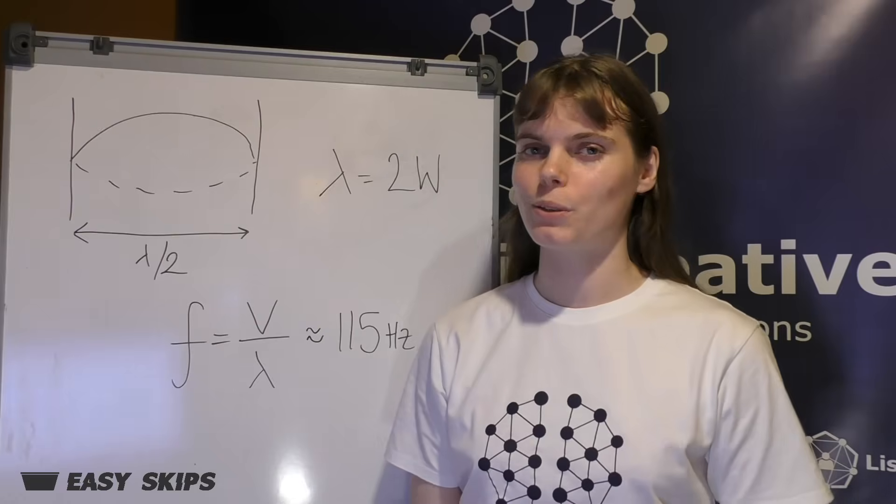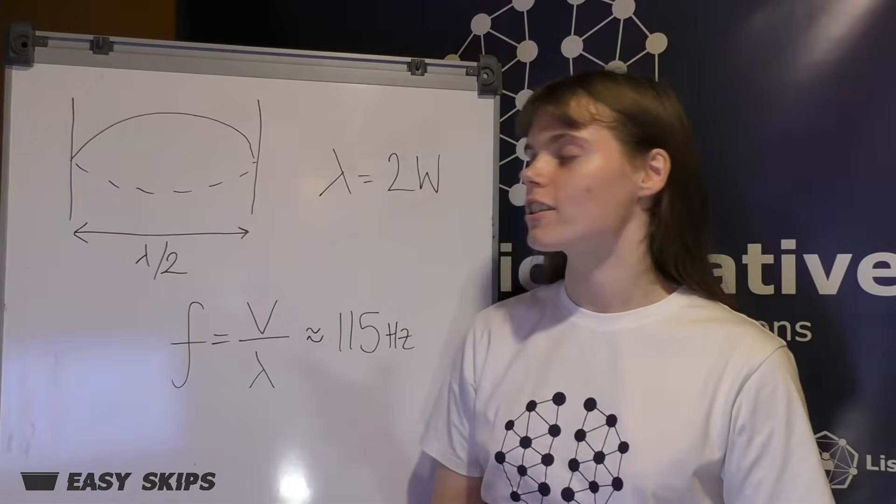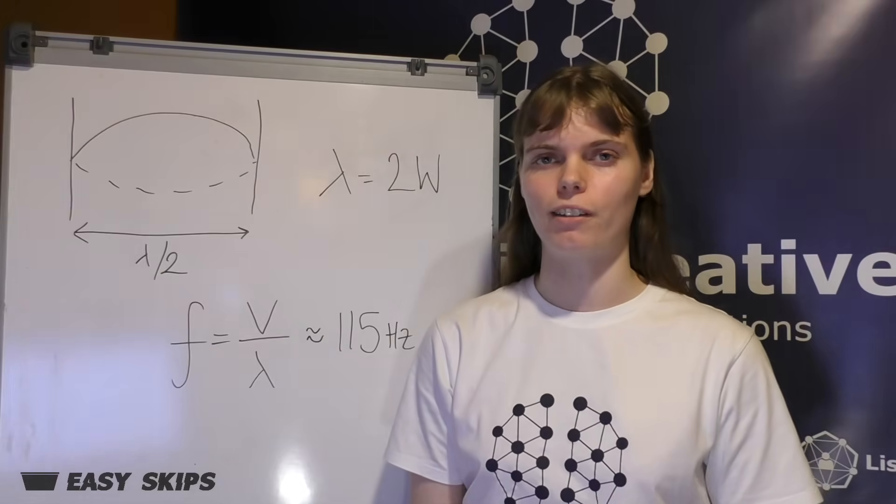So we can explain this using the equation that relates frequency and wavelength. Oh, so I can do some equations. Yeah. The fundamental frequency of the standing wave across the width of the skip occurs when the width of the skip is equal to half of the wavelength of the sound wave.